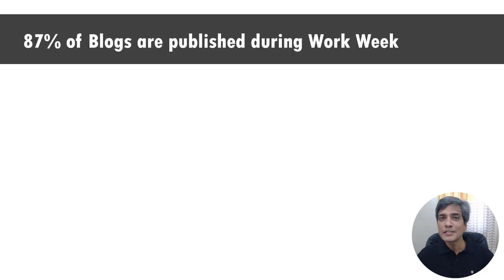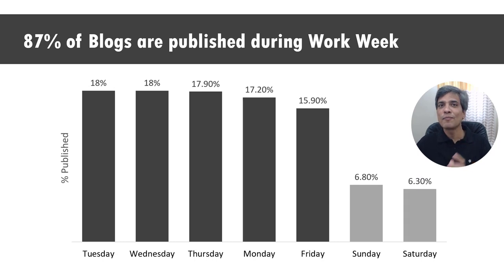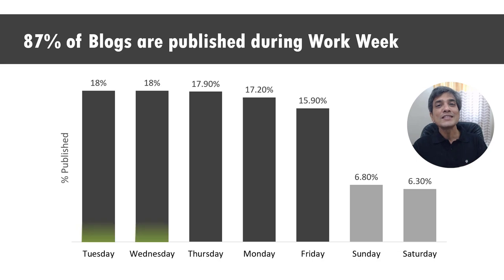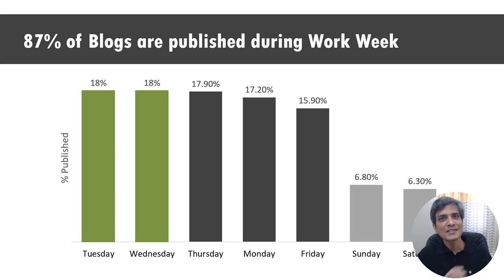So my narration for the slide would be: studies have shown that most successful brands publish their blogs during the work week rather than on weekends. Here is a chart that shows the percentage of blogs published during different days of the week. You would notice that a whopping 36% of the blogs are published during two work days — Tuesdays and Wednesdays. So if you want your blog to be successful, you can follow the best practices of successful brands and publish during Tuesdays and Wednesdays.